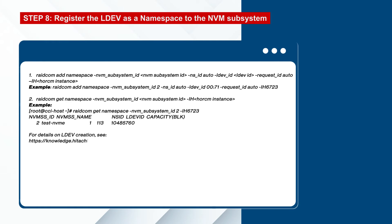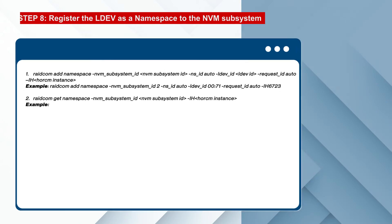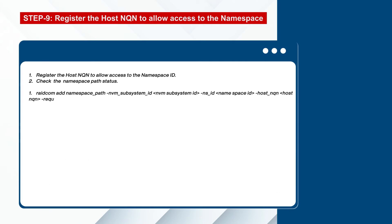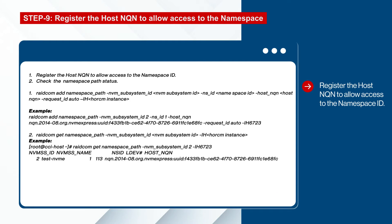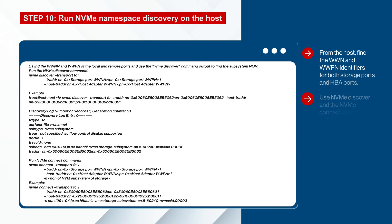Next, register the L-dev as a namespace to the NVM subsystem. We can identify one or more free L-devs or create new L-devs, then register the L-devs as namespaces to the NVM subsystem. After registering, verify that the namespace is assigned with the NVM subsystem. To allow access to the namespace, register the host NQN to the namespace ID in the NVM subsystem, then check the namespace path.